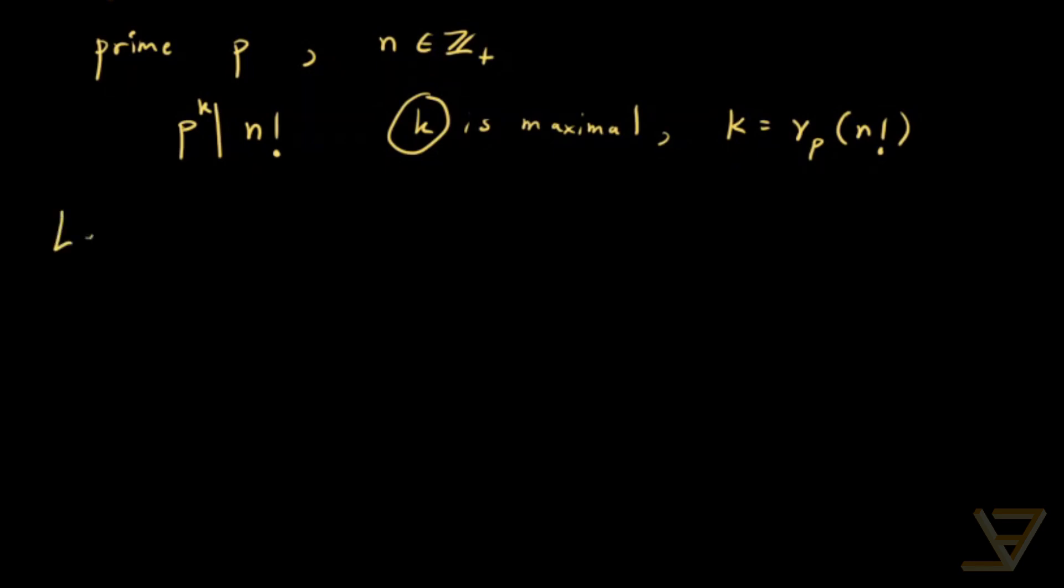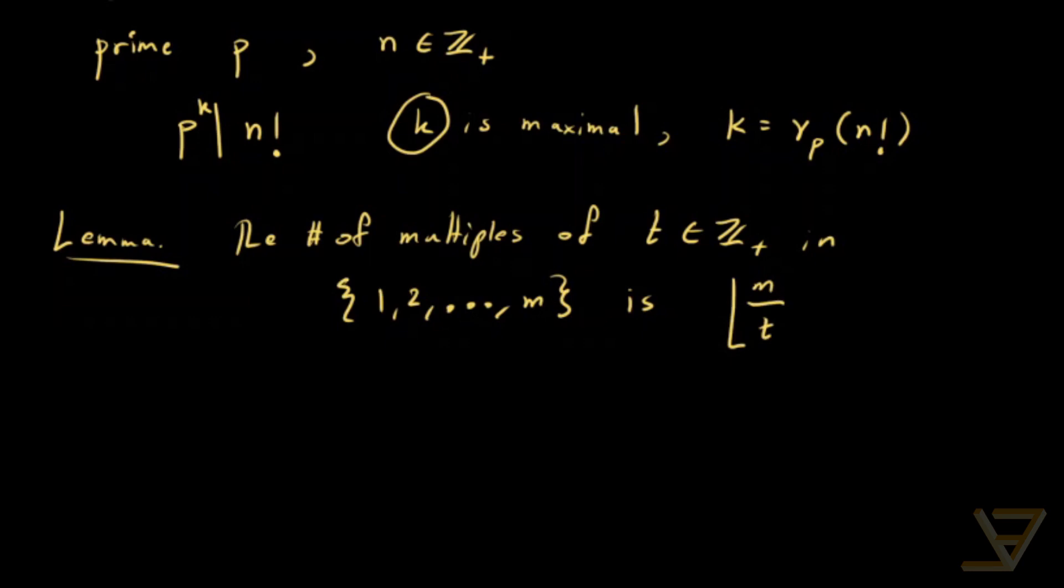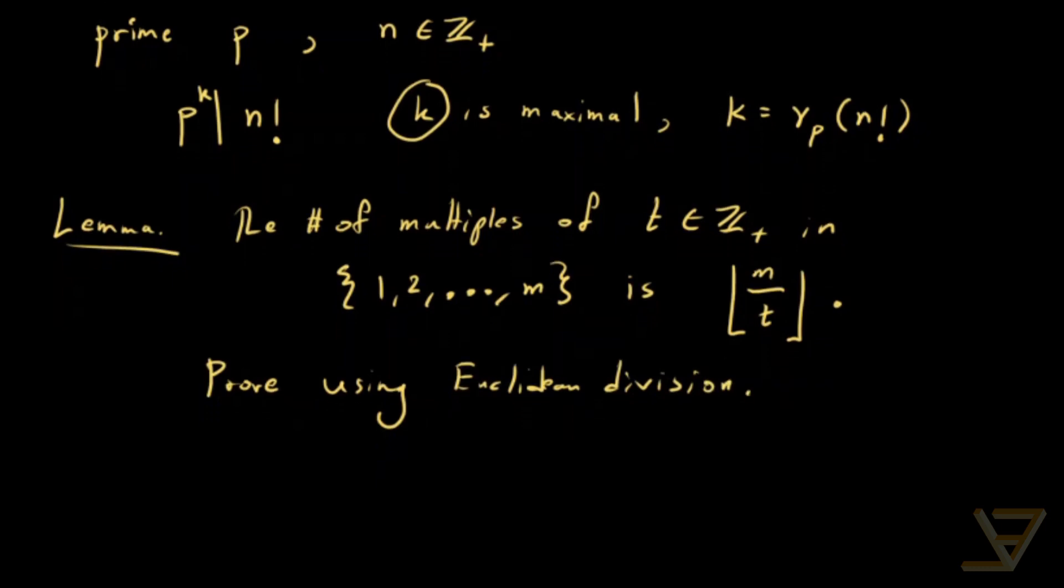And as a lemma, something that is well known and that we're going to be using is that the number of multiples of a positive integer t in the set 1, 2, all the way through to m is m divided by t floor function. And you can prove this using the Euclidean division method. Prove using Euclidean division, otherwise known as the division algorithm. So I'll leave that proof to you.